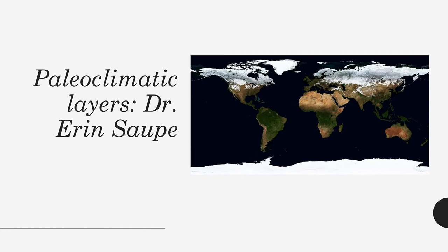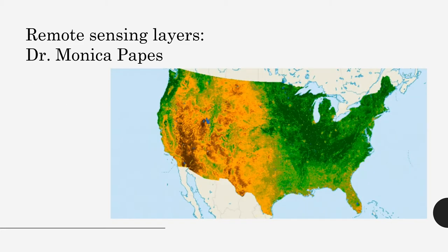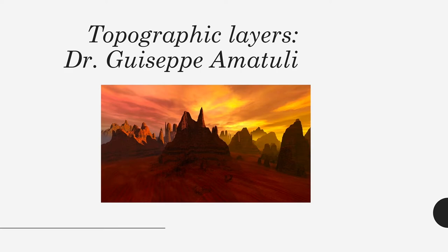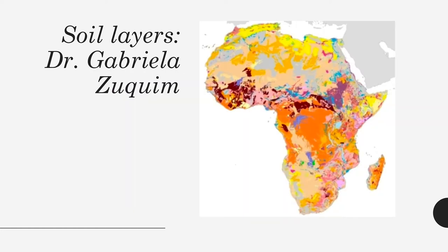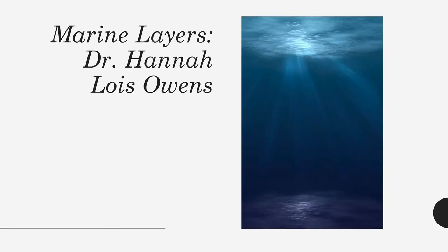We are going to have one lesson about climatic simulations with Dirk Karger, then another lesson about paleoclimatic simulations with Erin Saupe, one entire lesson about remote sensing layers with Monica Papes, one lesson about topographic layers with Joseph Amatulli, and one lesson on soil layers like pH and everything with Gabriela Zukin. Finally, Hannah Owens is going to talk about marine layers — so with all these things you will have very detailed information about everything you might need for any species.